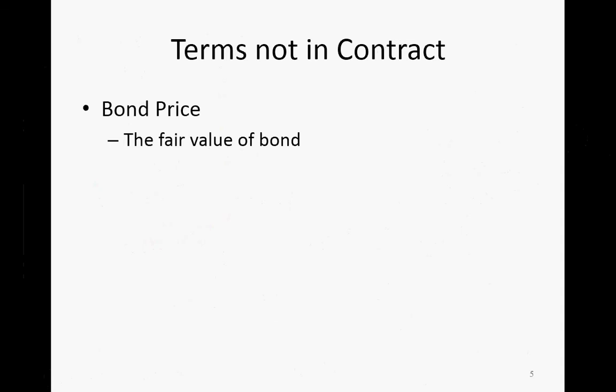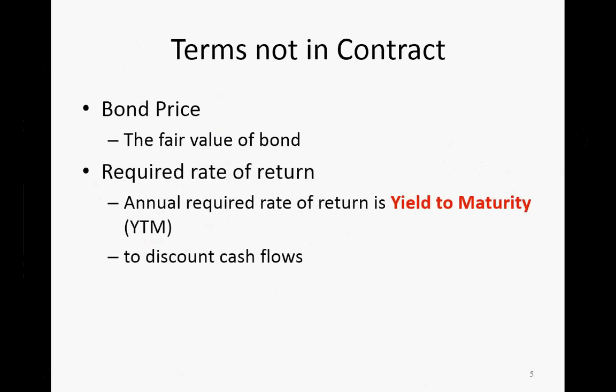The terms not written in the contract include the bond price — you see the face value is $1,000, that's how much you get when you redeem the bond, but you don't see the current prevailing price in the market. You also do not see the required return. The annual required return is called yield to maturity — remember this name. It is the required return for the bond, the holding period return, and you also use it to discount all cash flows generated by the bond.